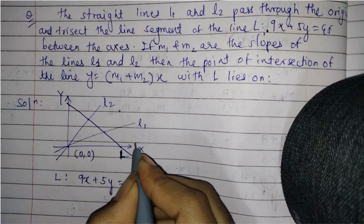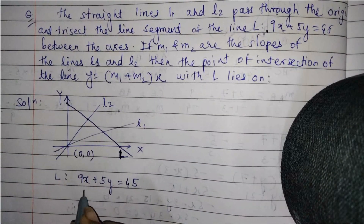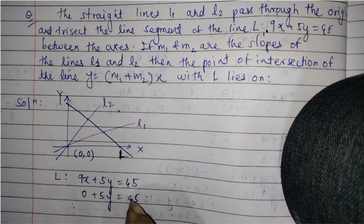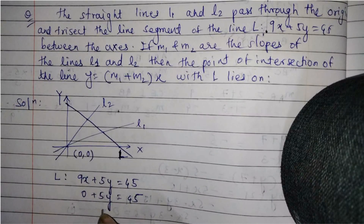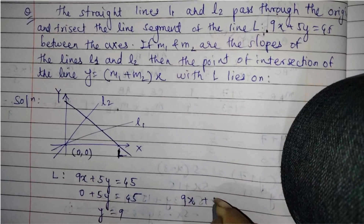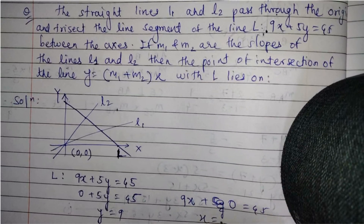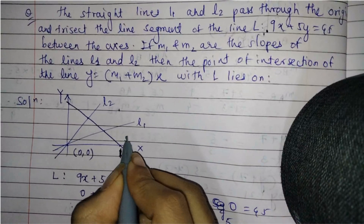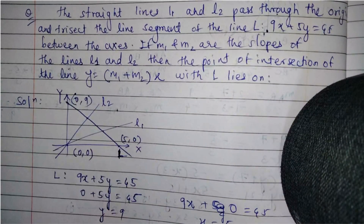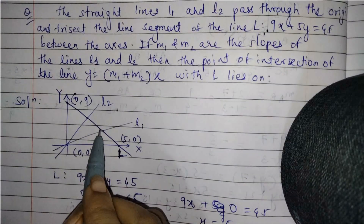We know there is an x-intercept and a y-intercept on line L. Substituting x equals 0: 5y equals 45, so y equals 9. Substituting y equals 0: 9x equals 45, so x equals 5. Therefore the x-intercept is (5, 0) and the y-intercept is (0, 9).